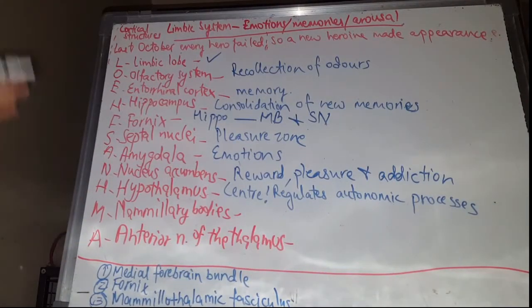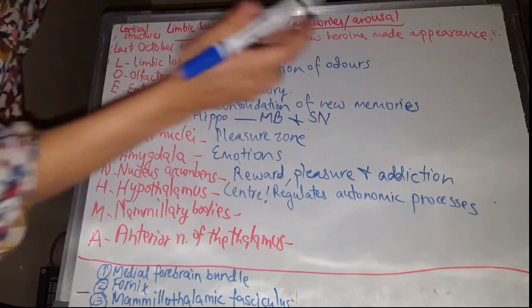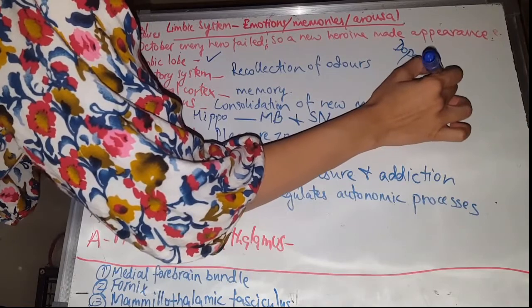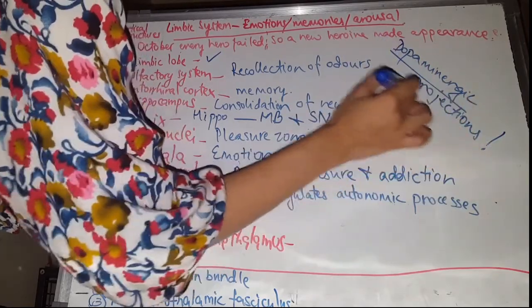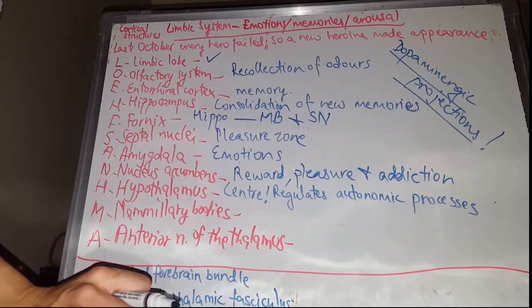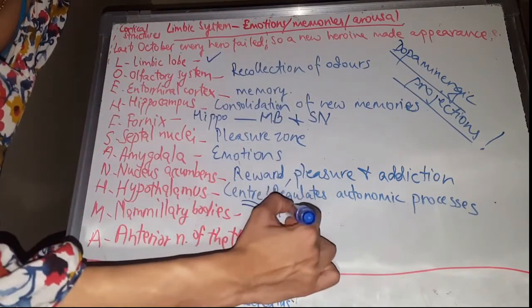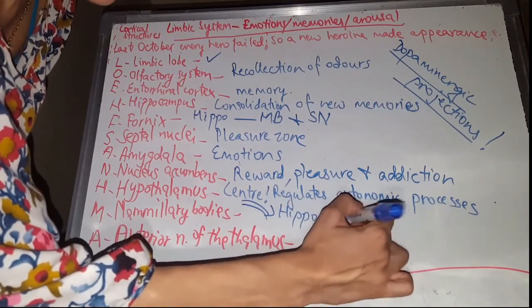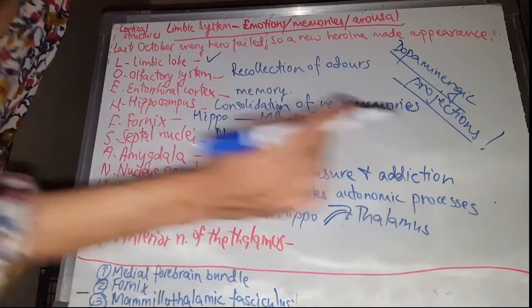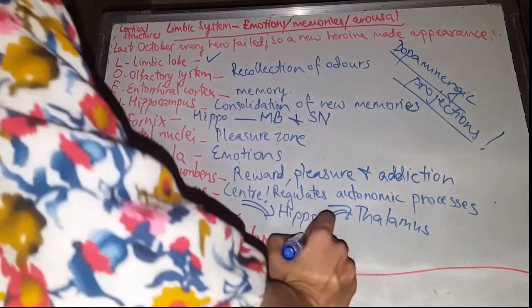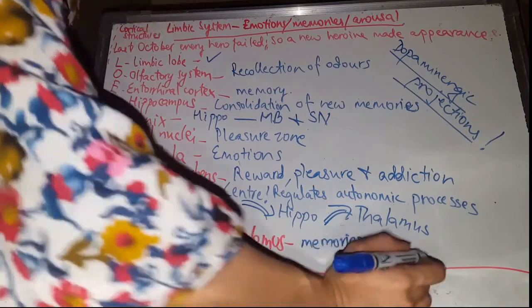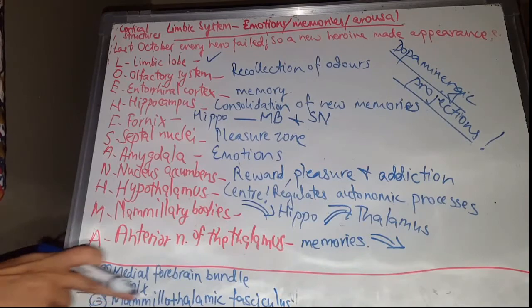One more thing you should know that the limbic system only emits dopaminergic projections. So, moving on to the mammillary body, it's a part of the hypothalamus, and it receives input from the hippocampus via the fornix, and projects it to the thalamus via the mammillothalamic fascicles. The anterior nucleus of the thalamus is for memory processing.